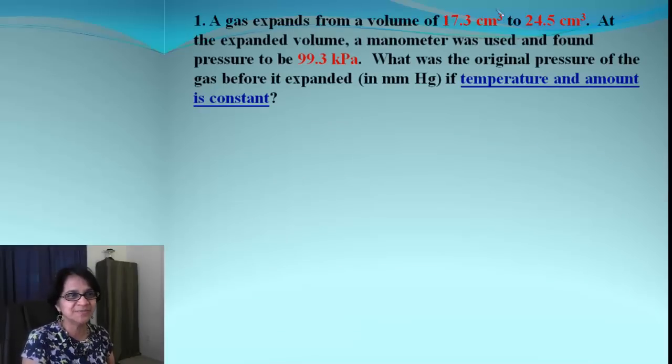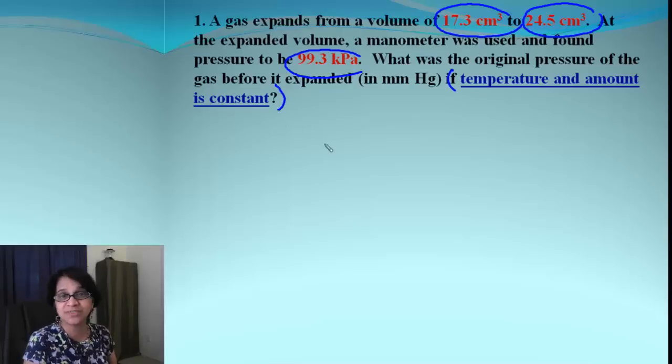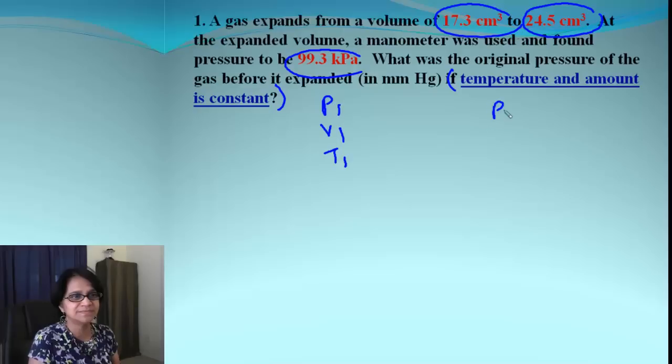So in this question, we have all these values given to us. And of course, there is some extra information given. Let's start listing what is given. The first one comes first. So volume of 17.3 cm³, that I am going to write down as the first volume. To 24.5, that must be V2.